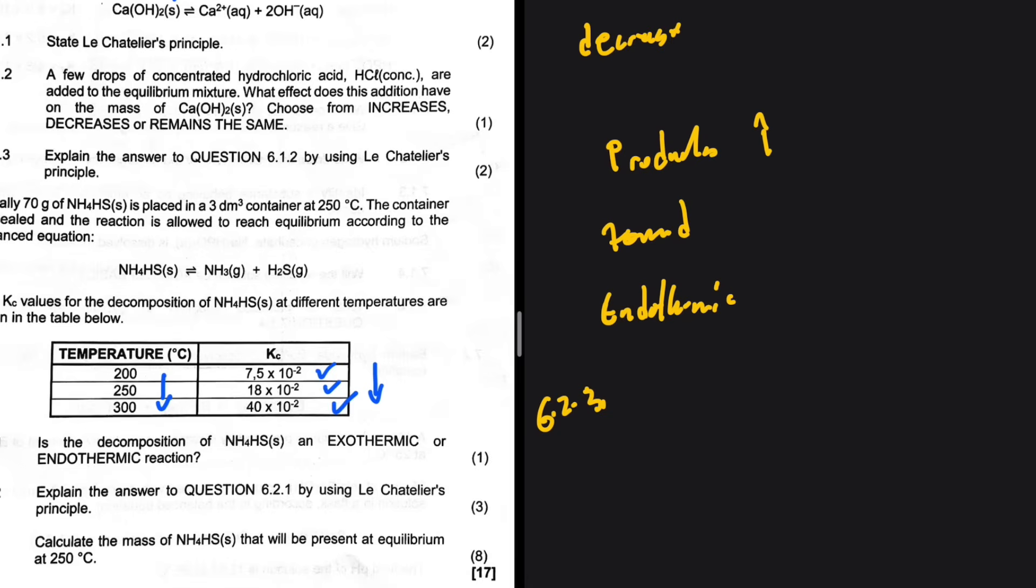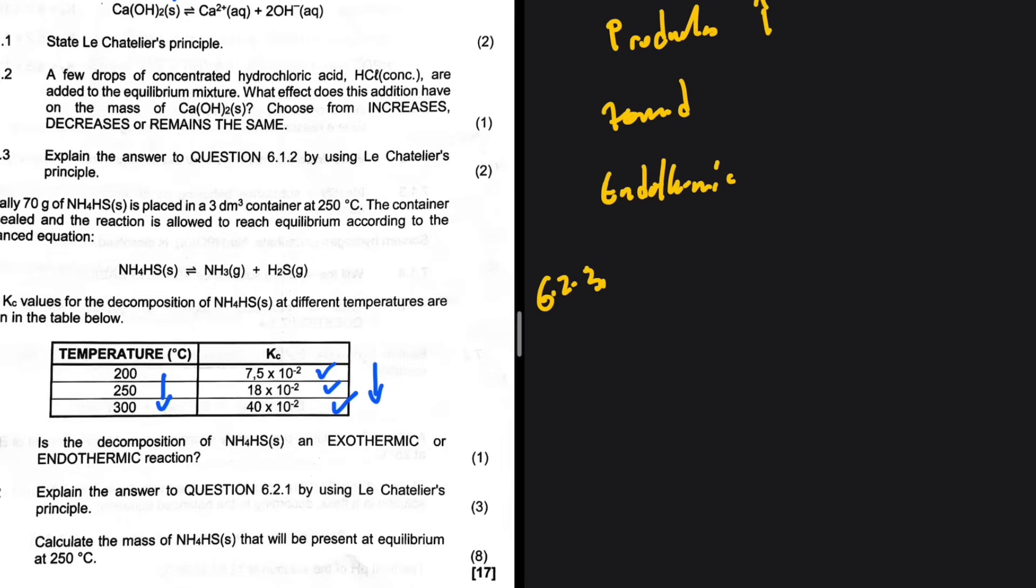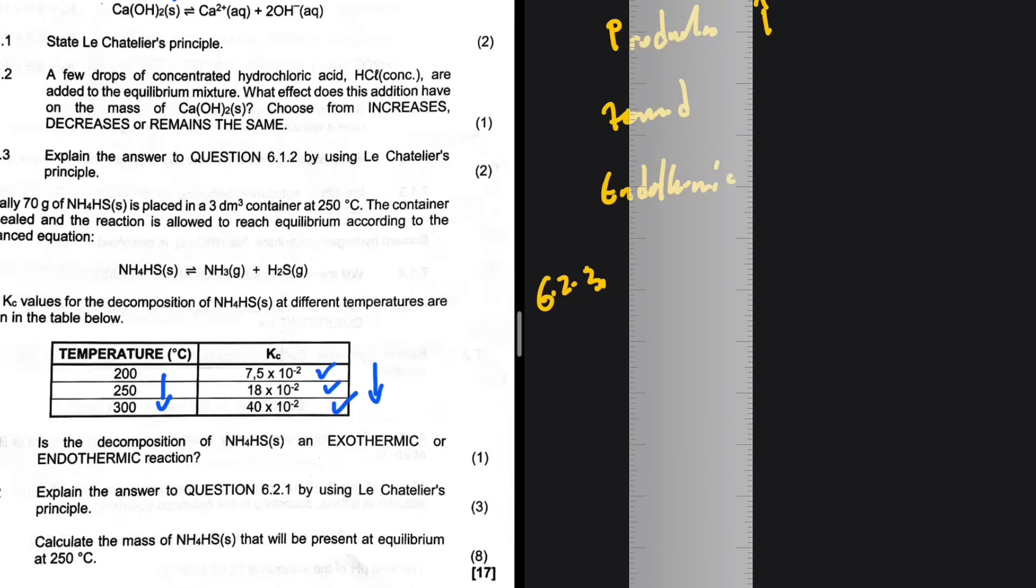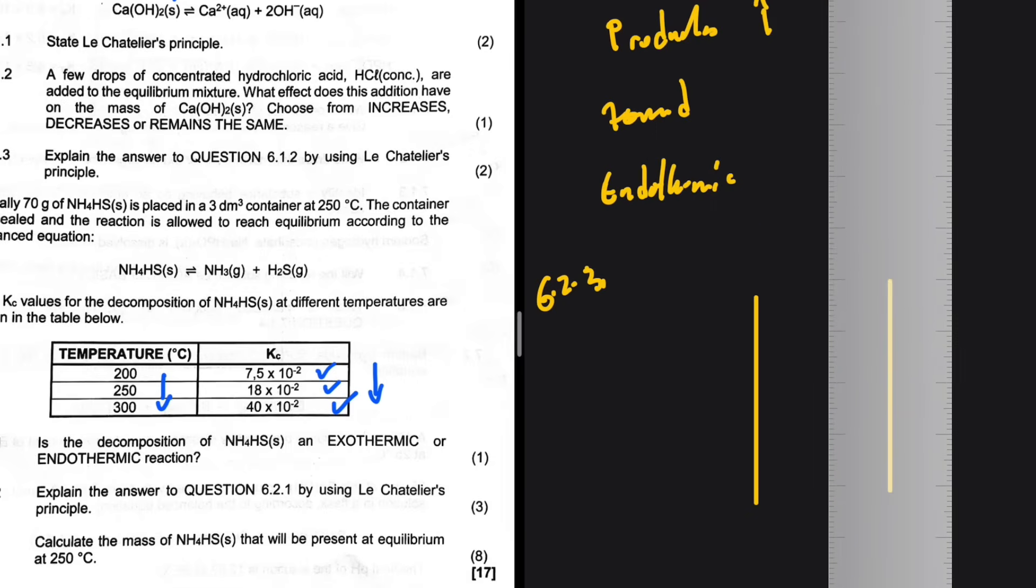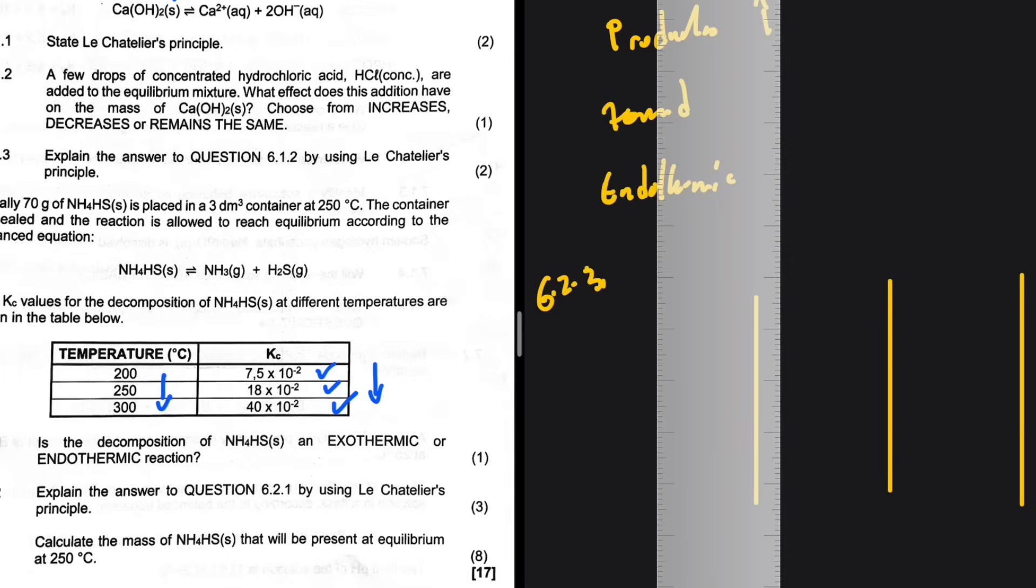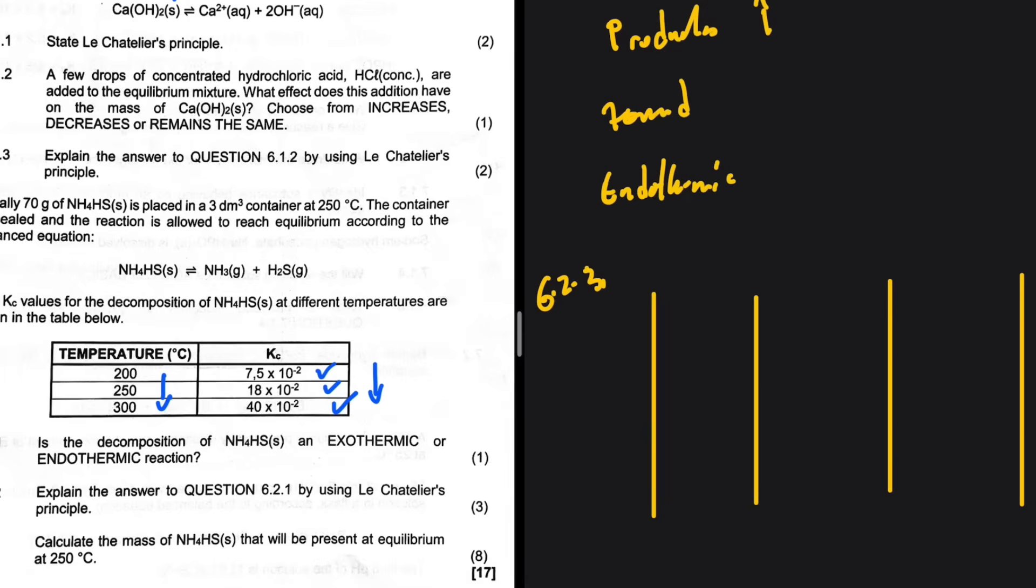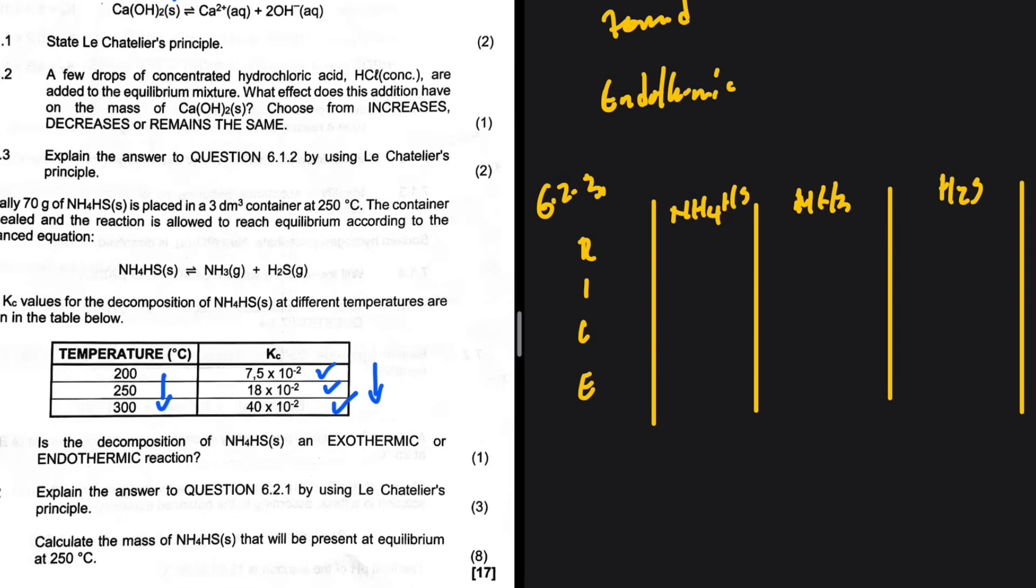6.2.3: Calculate the mass of NH4HS that will be present at equilibrium at 250 degrees Celsius. Let's stick to the basics. We need our table, the ICE table. This is NH4HS goes to NH3 plus H2S. We want to calculate the mass. We're given the Kc, so we need to fill the table and set up a Kc expression, substitute, and we're going to have the mass.